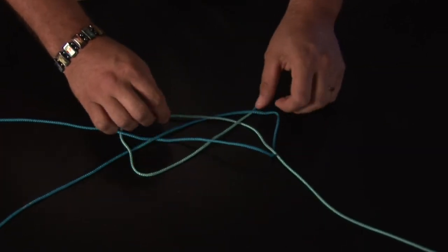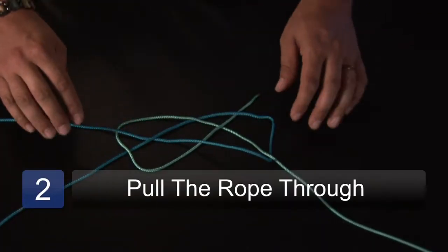What you can see I've got here is I've got two loops, two loops with a cross in it like so.